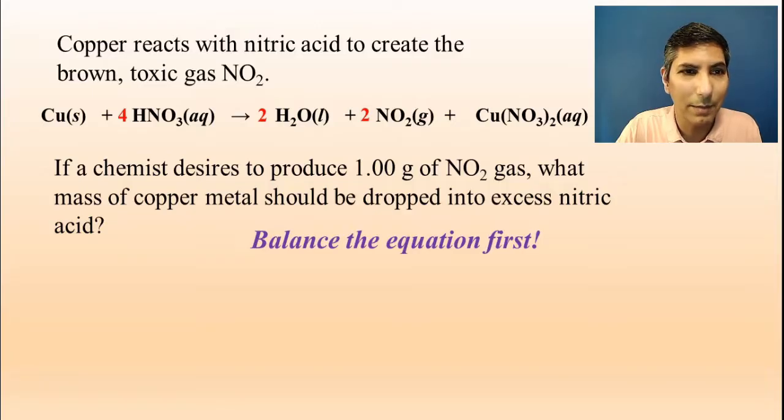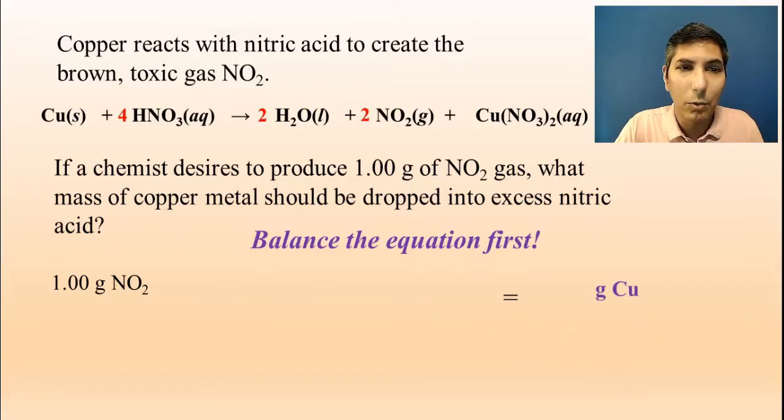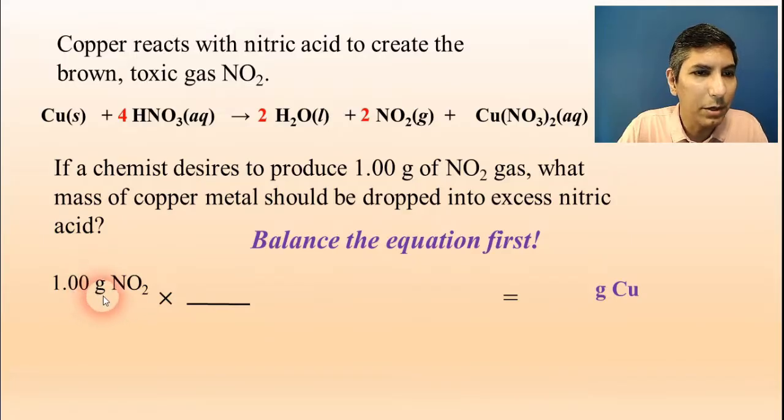The question says we're trying to produce 1.00 grams of nitrogen dioxide, so I'm going to write that down. That's what we're starting with in our problem. The question is asking us to determine the mass of copper metal, so that's grams of copper. Way down here at the end, I'm trying to convert to grams of copper. We're going to go through our three-step process. Step one is convert to moles. Whenever we're converting from grams to moles, we start by putting grams on the bottom because that's the unit that we're trying to get rid of. Since we're converting to moles, moles need to go on the top, so one mole on top.